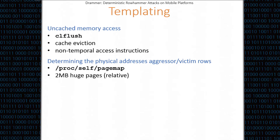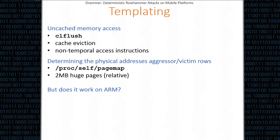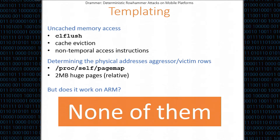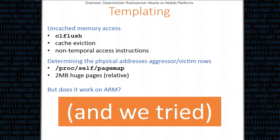Let's start with memory templating. On x86, there are many ways to do this. The most easy way is to use CLFLUSH, which is an instruction that will flush the CPU cache, because you need to flush the CPU cache or else all your memory accesses will be served from the cache. For Rowhammer, we want to access the actual DRAM chips. There are other ways to do cache eviction, or you can use non-temporal access instructions. But you need a way to get uncached memory access. Another thing you need is a way to determine what address you should read from in order to trigger access to the aggressive rows correctly. The question is: does this work on ARM, given that it works on x86? Can we port this easily to ARM? It doesn't. None of these tricks work on ARM — we tried all of them, and even more, but that's out of scope for today.